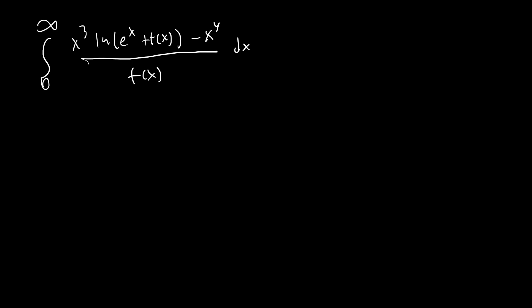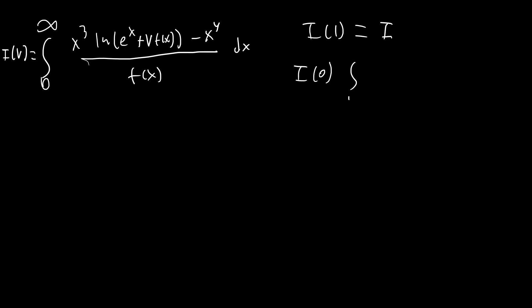So let's go ahead and rewrite this as I(v) for some variable v, replacing f(x) with v times f(x). Notice that I(1) is our original integral, which we'll just call I. And I(0) is equal to the integral from 0 to infinity of x cubed times ln(e^x) — which is just x — so it's x to the fourth minus x to the fourth, and this whole integral goes to zero. So we have one known value and one value we're looking for.